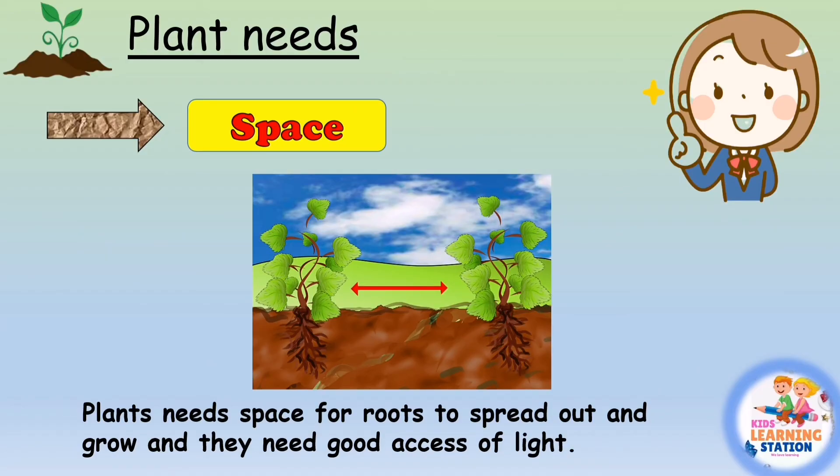Space: plants need good space to grow. They need space for their roots to spread out and grow, and they need good access to light. That is why plants need enough space to grow properly.